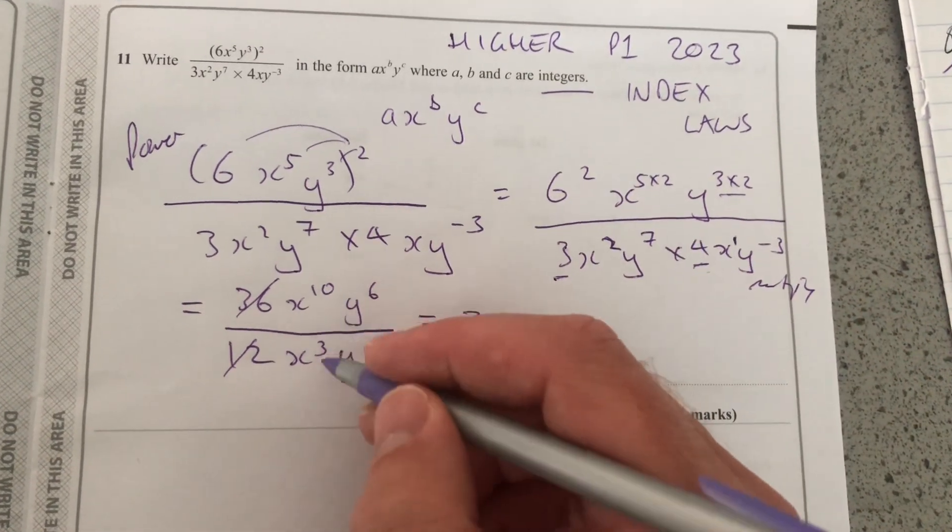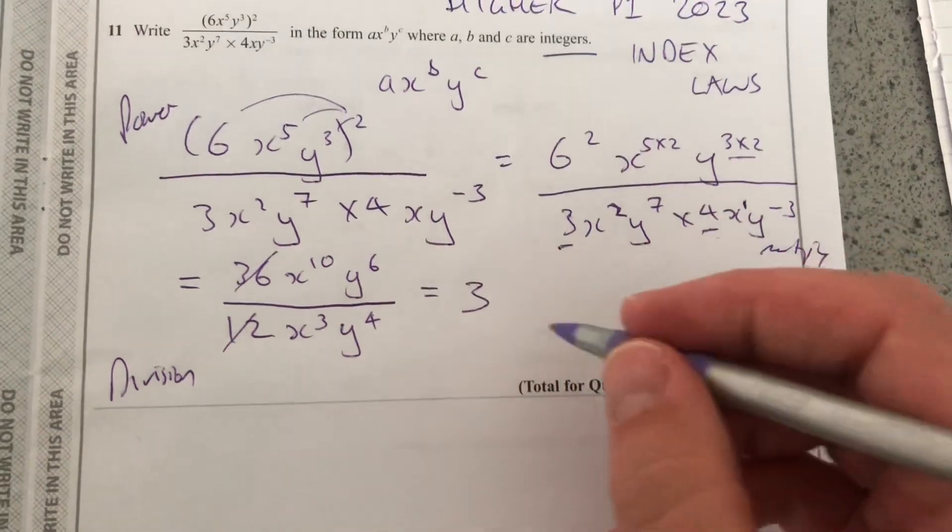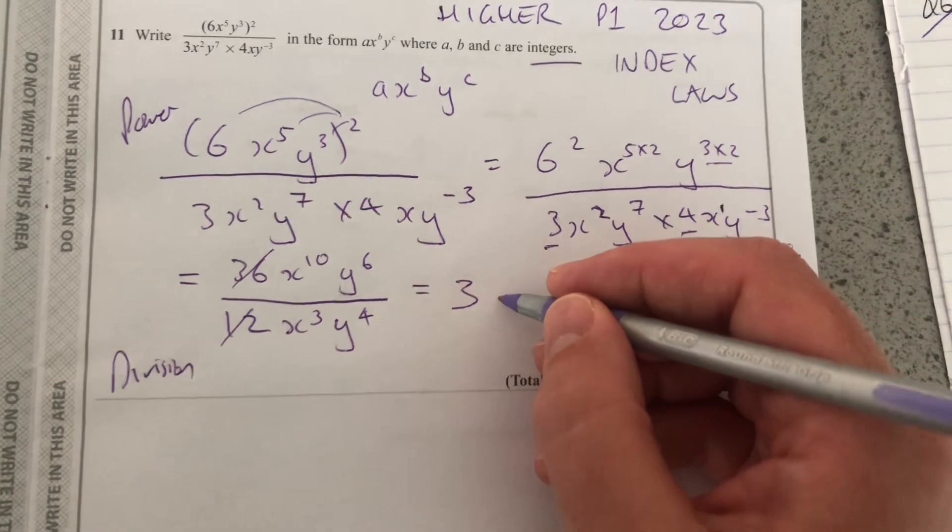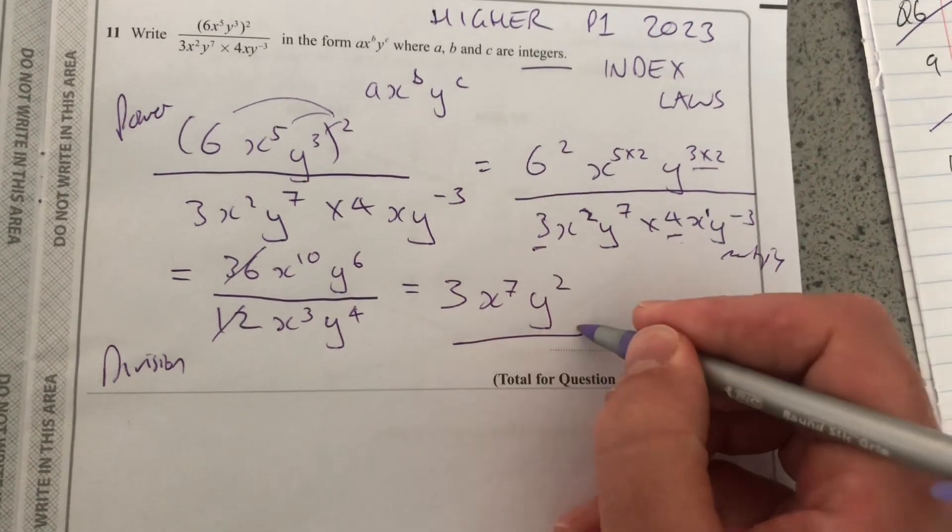We're now going to use the division where you subtract. So using three laws in one here. X to the 10 divided by X to the 3 is X to the 10 minus 3. So that's X to the 7, Y squared. So that's the final answer.